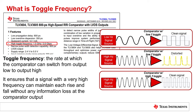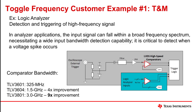Last but not least of our key specs is toggle frequency. This refers to the rate at which the comparator can switch from low to high without losing data on the output and maintaining a clean signal even at high frequencies. This plays an important role in many applications, but one example comes from test and measurement in an oscilloscope. The comparator in the scope application is monitoring the auxiliary trigger, waiting for an input signal to reach a threshold before quickly triggering. Because we may not know the exact frequency of the input signal, it's really important that our comparator has a very wide bandwidth to ensure the input will be detected even for high-frequency signals. Moving to a faster comparator with a lower prop delay will also directly affect toggle frequency — we see a 9x improvement from TLV3601 to TLV3801.